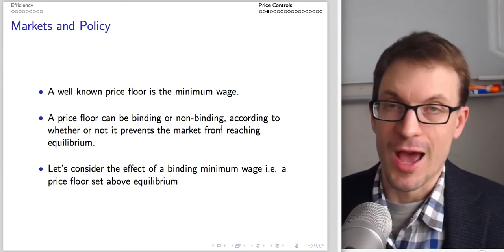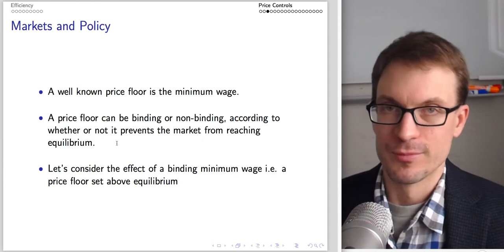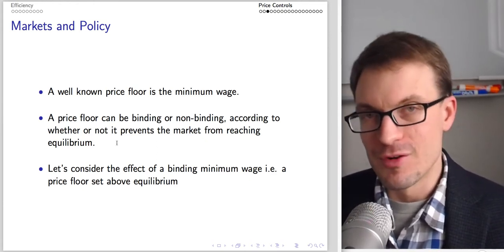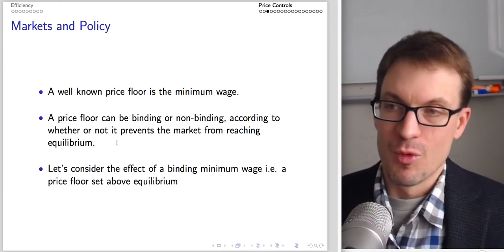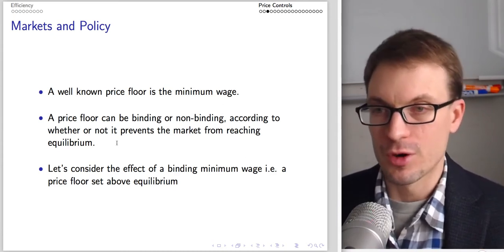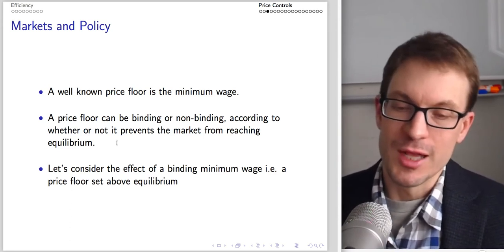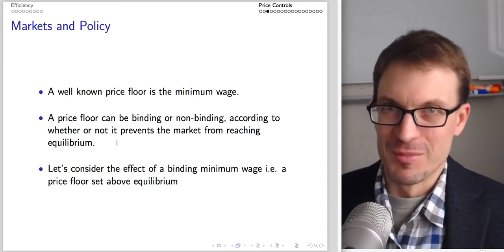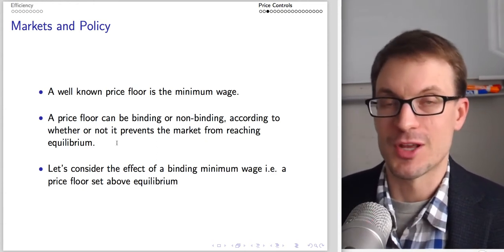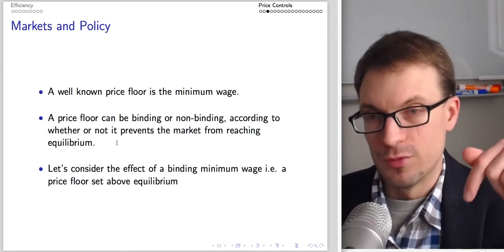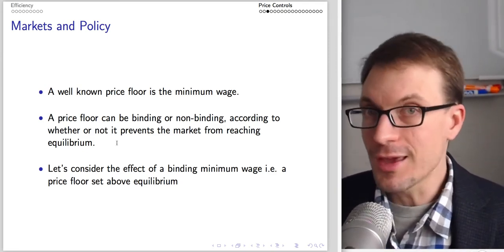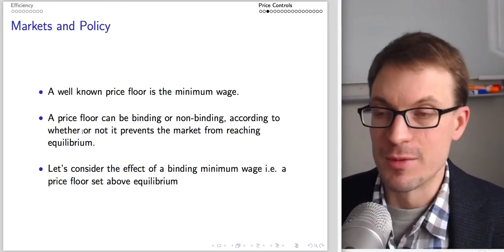The price floor can be binding or non-binding depending on whether it prevents the market from reaching equilibrium. If the minimum wage is set below the market equilibrium, it doesn't matter — the market doesn't want the price to go that low anyway. However, if the price floor is set above the equilibrium, then it matters — it keeps the price from going down to equilibrium and creates distortion. The effects of a minimum wage depend strongly on where it's located relative to equilibrium.